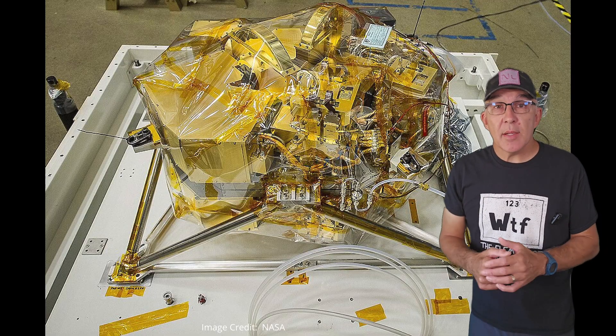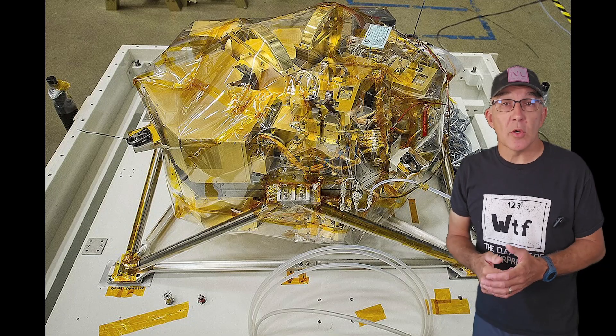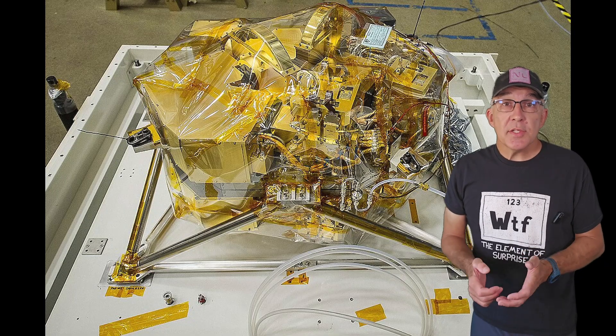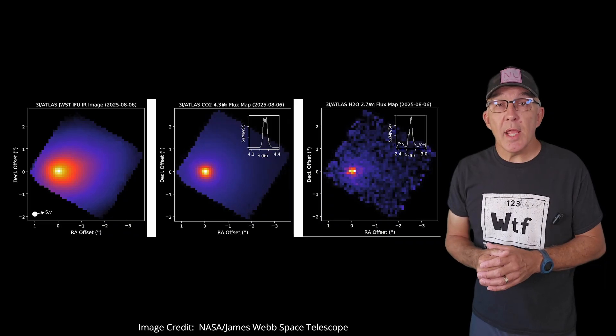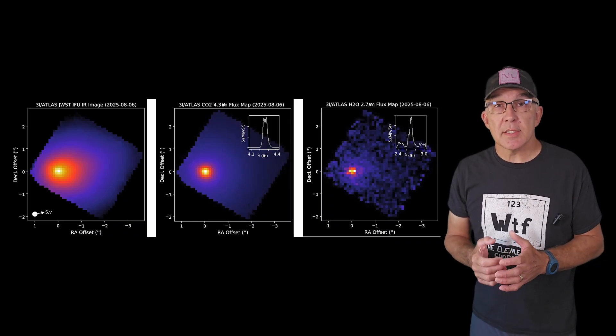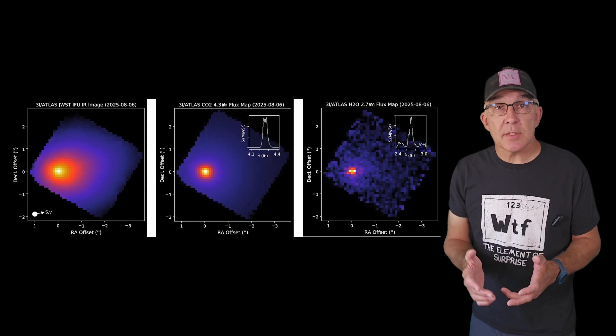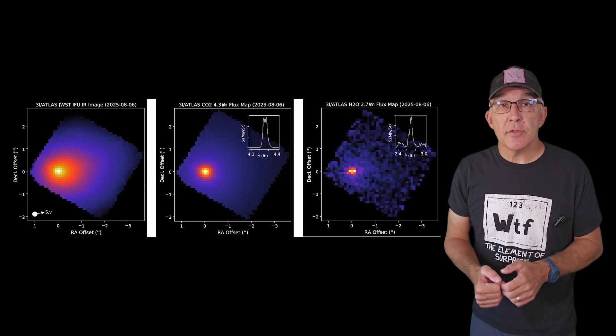Let's get into the JWST near-cam observations of 3I Atlas from August the 6th. The observations are at similar wavelengths to the ones from SPHEREX, but JWST has way better resolution of 0.07 arc seconds. That's not a criticism of SPHEREX, the two telescopes are just designed to do very different jobs.